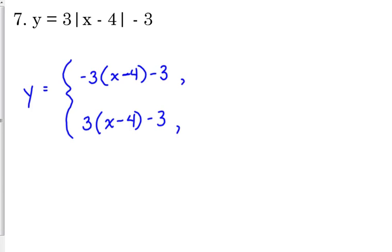We put a comma after each of these, and here's where the piecewise part comes into play. All right. So where is the vertex of this absolute value function located? 4. We've talked about how to find that already. We take what's inside the absolute value, set it equal to 0, solve for x. So we know that it changes at 4.